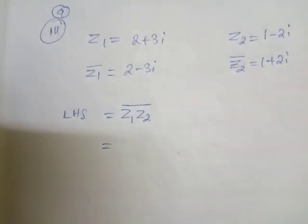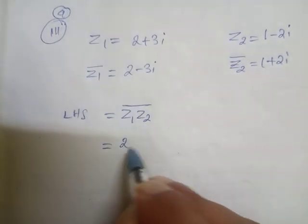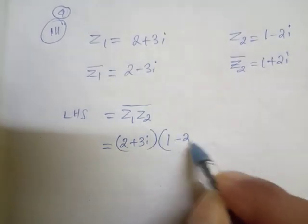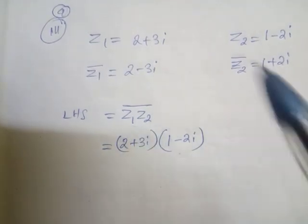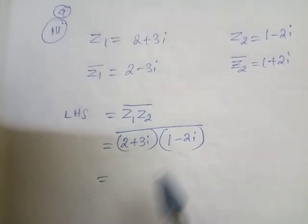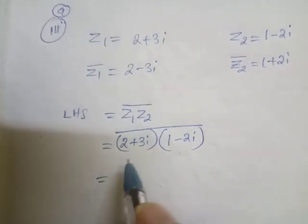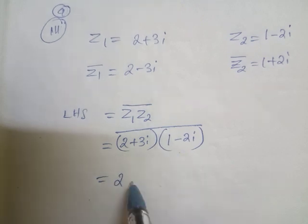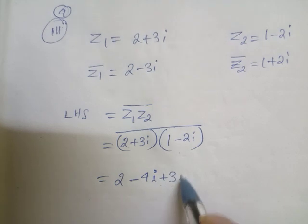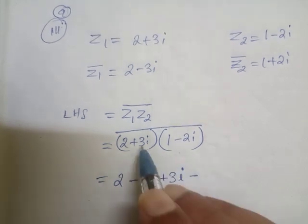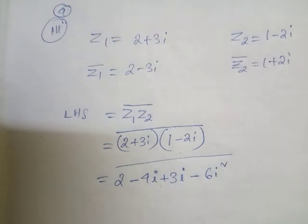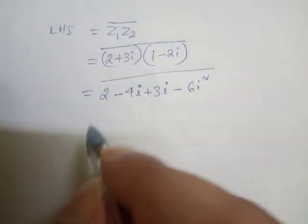Now put in the values: (2 + 3i)(1 - 2i), then take the bar. Go for the multiplication directly: 2 into 1 is 2, 2 into 2i is 4i, then 3i into 1 is 3i, and 3i into 2i gives 6i squared — all under the bar.